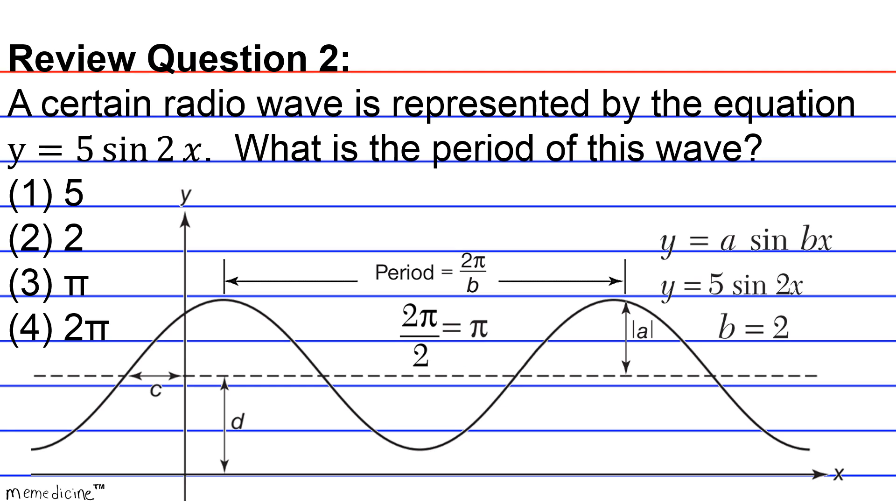So this is pretty straightforward. It's just understanding the convention of how the equation of a sine wave is written. That's all you really needed to know for this question. Therefore, the correct answer choice is going to be 3.